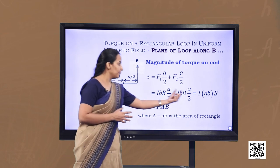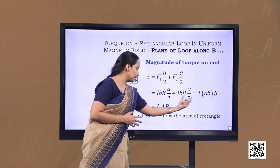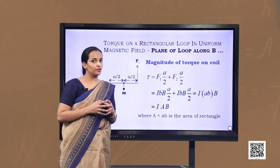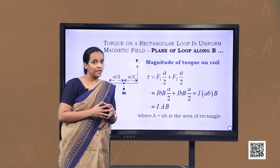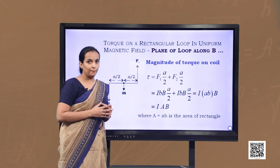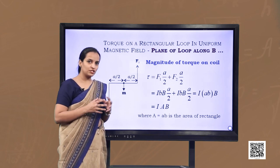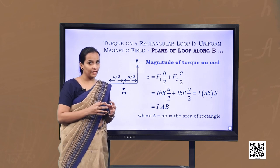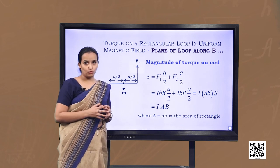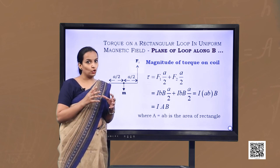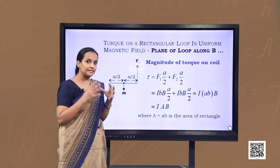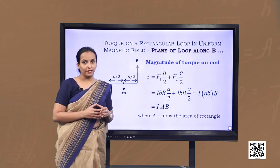Here AB is nothing but the area of the rectangle. So we now have the expression for the torque experienced by the rectangular loop placed such that the uniform magnetic field B is in the plane of the loop, and the normal of the coil makes an angle of 90 degrees with the magnetic field.